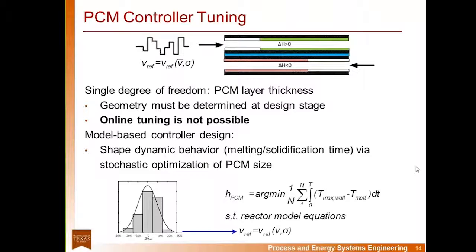The PCM layer, or the phase change material layer, is in essence a temperature-controlled device. Likewise, it can be tuned appropriately by adjusting its thickness. The thicker it is, the longer it will be able to withstand disturbances before melting completely. The thinner it is, the lighter and more portable the reactor will be. Unlike traditional control systems, tuning the PCM thickness cannot be done online, and therefore it must be fixed at the design stage. Since the operation of these systems is subject to fluctuating operating conditions, it is intuitive that stochastic optimization is used to tune the thickness. A typical method is to take our objective function, which in this case is the deviation of the maximum temperature from the melting temperature and integrate through time and average over a large number of realizations of the disturbance space.